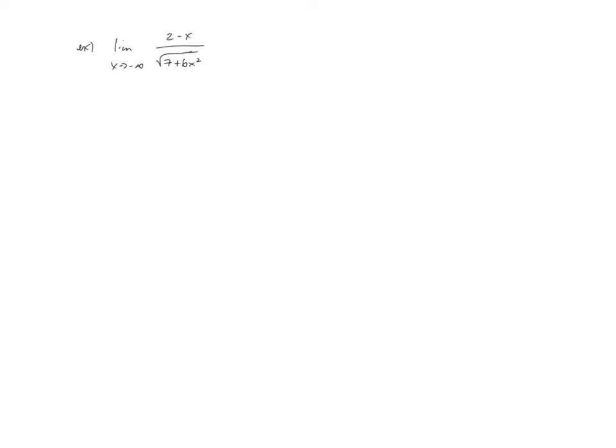Alright, so in this video we're going to continue our discussion with limits involving infinity and take a look at another example. Now this one does not happen to be a rational function. A true definition of a rational function is a polynomial over a polynomial, which is not what we're dealing with in this case seeing as we have this radical in our denominator.